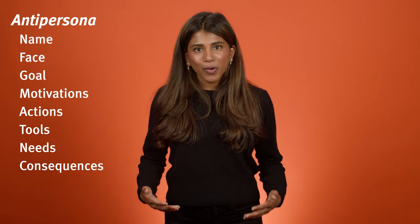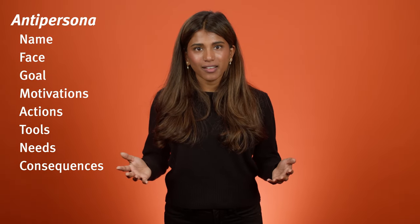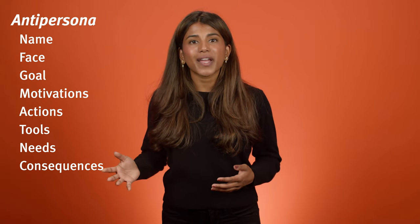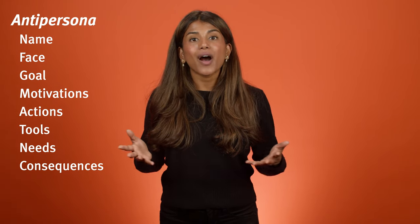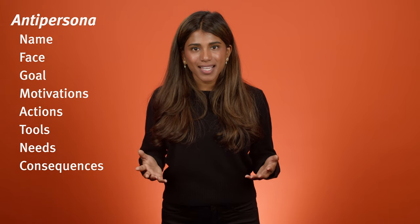Once you've come up with all eight elements of your anti-persona, your product design team can refer to it throughout the user-centered design process. It will help ensure that they're always aware of detrimental risks and will increase the likelihood that they make design decisions that mitigate these risks.